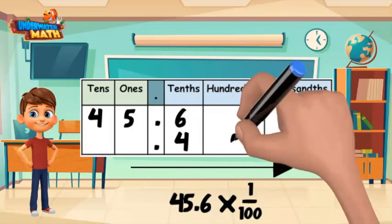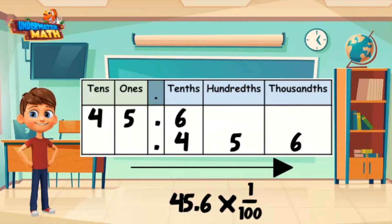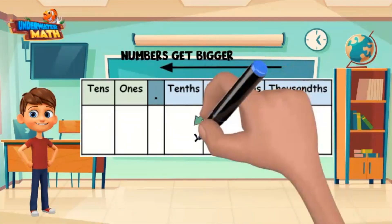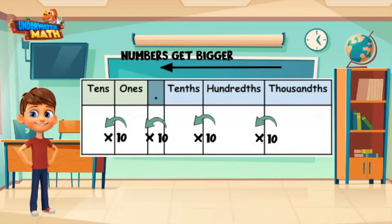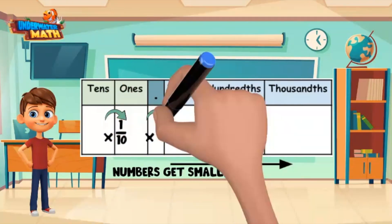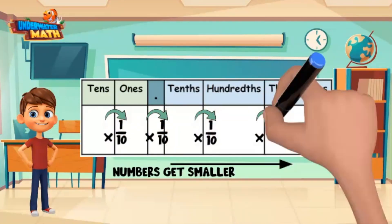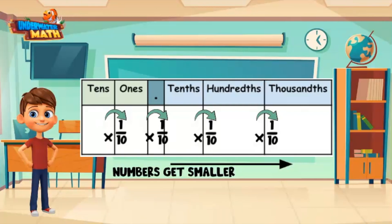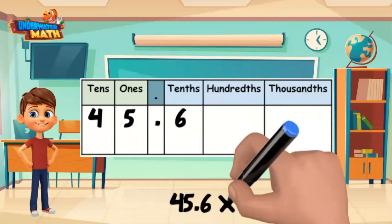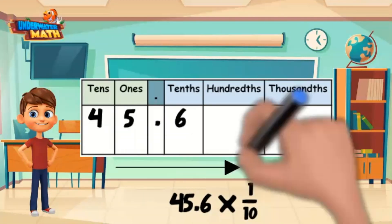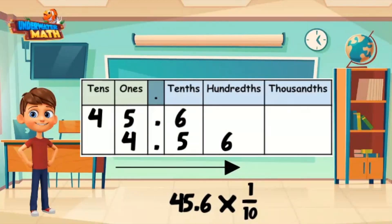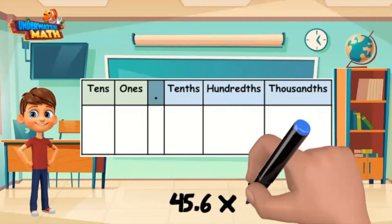To review: moving to the left multiplies a number by 10 each column. Moving to the right multiplies a number by one-tenth each column. If you move two columns, you have multiplied by one-hundredth because one-tenth times one-tenth is one-hundredth. When multiplying by one-tenth, you can shift your digits one place value to the right around the decimal point. When multiplying by one-hundredth, you can shift your digits two place values to the right around the decimal point.